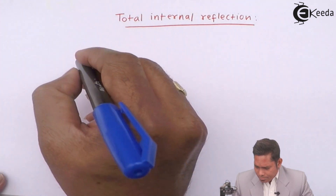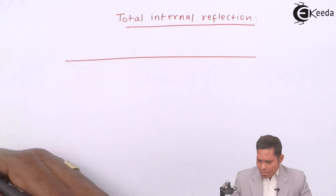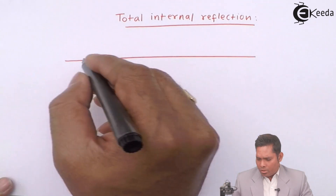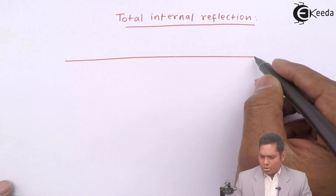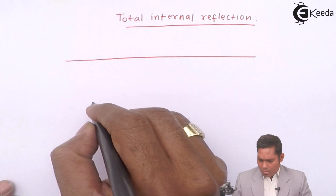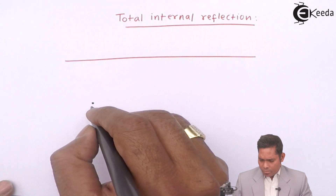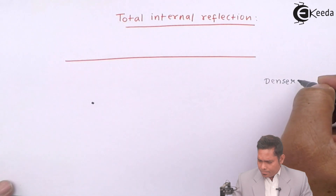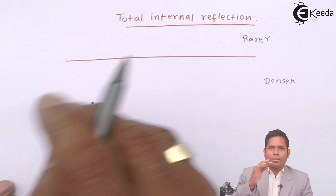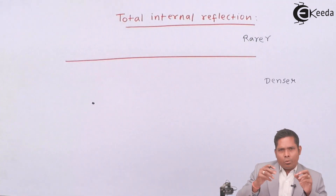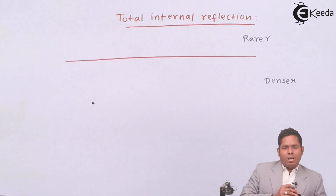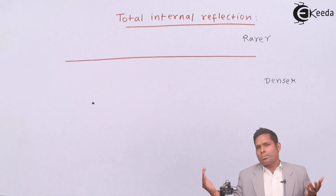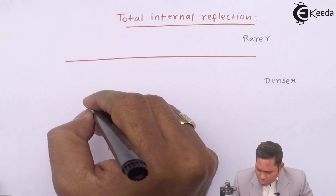Let's consider the boundary interface which separates two media — the denser medium below and the rarer medium above. We will consider a point source of light and see, as it emits rays in all possible directions, how they come out — or whether they come out at all — in the other medium.